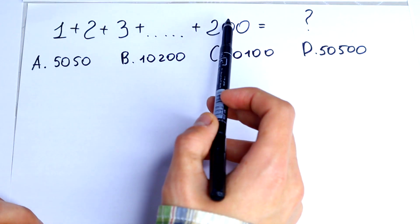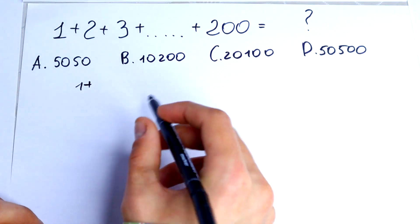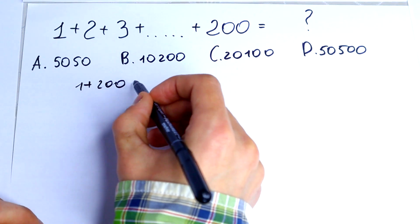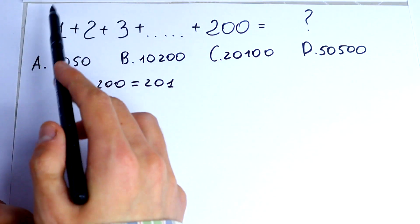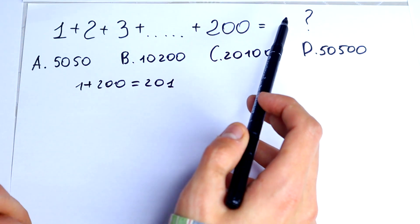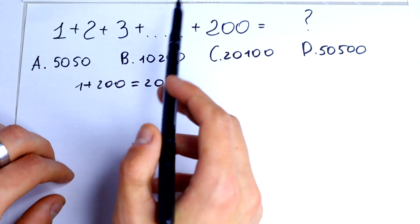1 plus 200, it would be equal to 201. Let's go from this side to that side. Let's sum every value.